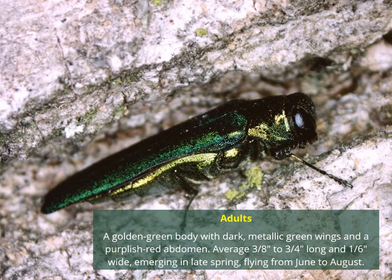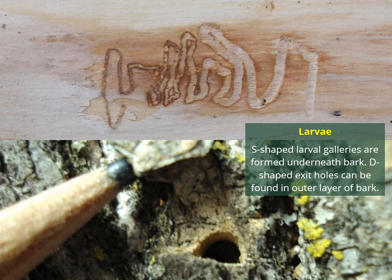The adults emerge in late spring and will fly from June to August. One way to tell if a tree has been infested is to look at the bark — this is especially useful for firewood. If you flip the bark over and look at the underside, you might find these S-shaped larval galleries, where the larvae have been living and moving underneath the bark. Once the larvae need to leave the tree, they make their way through the bark.